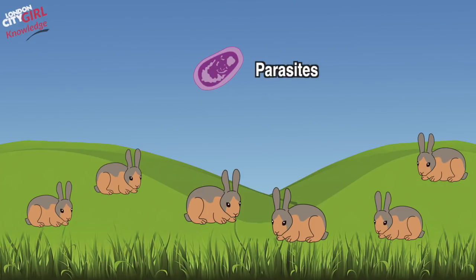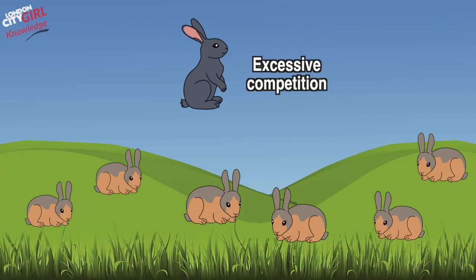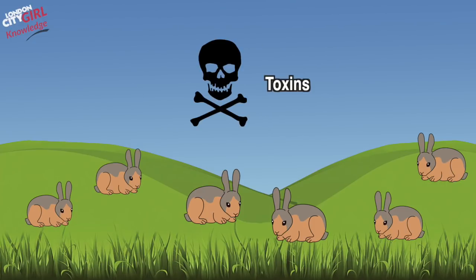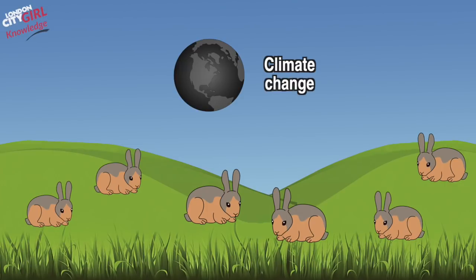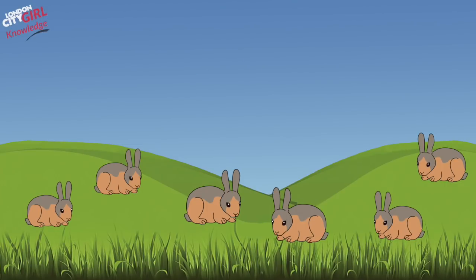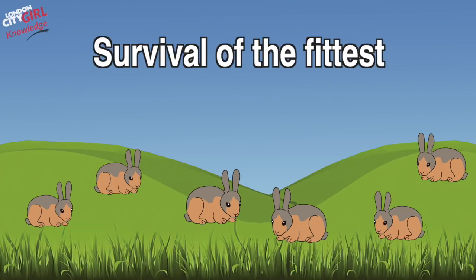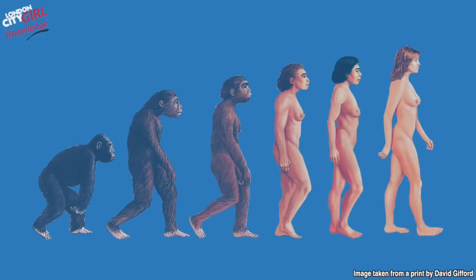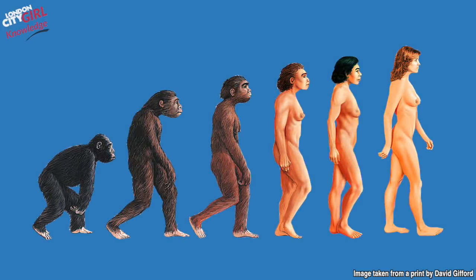Predators, parasites, excessive competition, toxins, and climate change are just some of the things in nature that weed out the weaker members of a population from the rest. The consequence of natural selection is neatly expressed by the phrase survival of the fittest. And that in a nutshell is evolution.